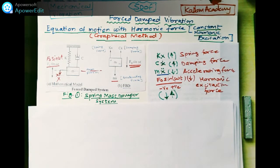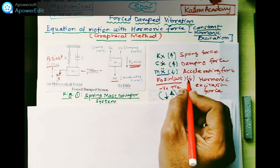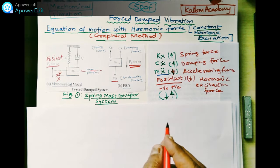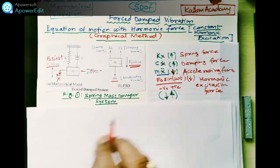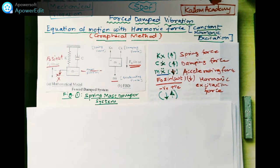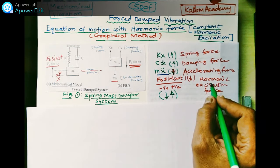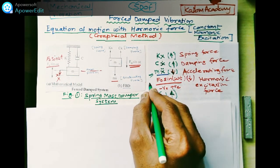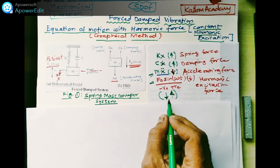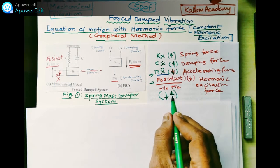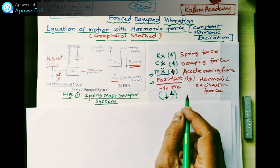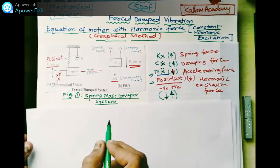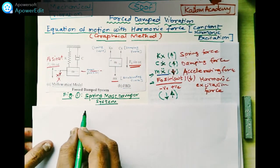This harmonic excitation force fo·sin(ωt) is in the downward direction, and the accelerating force is also in the downward direction. The spring force and damping force are in the upward direction. We assign negative sign for downward and positive for upward direction. The purpose of this is to get the equation of motion for this spring-mass-damper system.